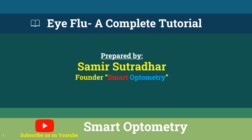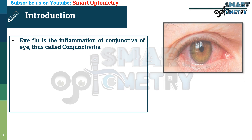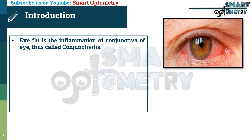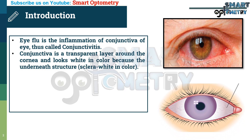Today, I will discuss about eye flow and its management. Eye flow is the inflammation of the conjunctiva of the eye, thus called conjunctivitis. The conjunctiva is a transparent layer around the cornea and looks white in color because of the underneath structure, the sclera, which is white in color.